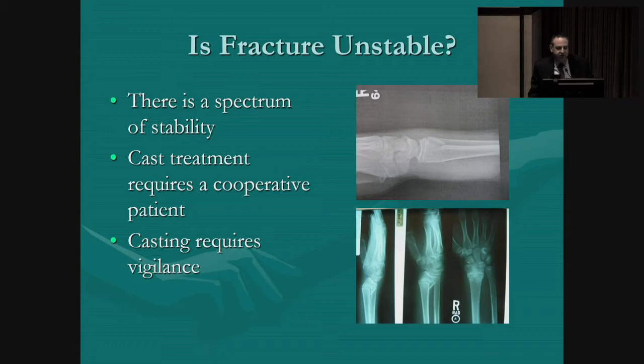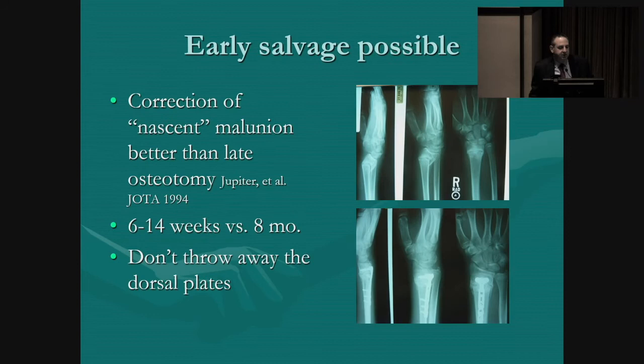This is a patient who broke his wrist while at summer camp — doesn't look too displaced, doesn't look too angulated, little dorsal comminution. But by the time he got home from summer camp, he had this impending malunion. There is pretty good evidence that you should address impending malunions. Jupiter studied this in 1994 and found that early correction of a nascent malunion did better than ones treated late.